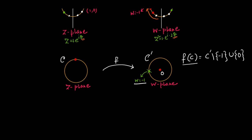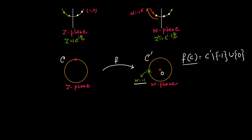From this, you can understand what will be a continuous function: a continuous function is one where the image is a continuous object — you can draw it in one stroke without lifting your pen. The definition of a continuous function is something like this.